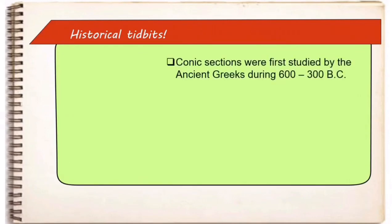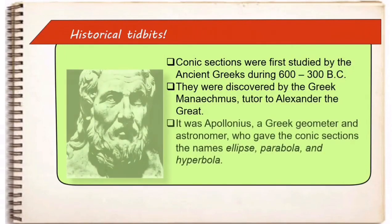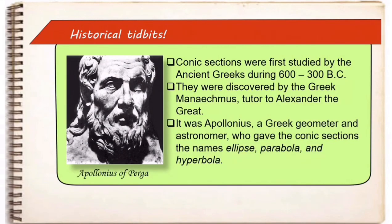Regarding the history of conic sections: conic sections were first studied by the ancient Greeks during 600 to 300 BC. They were discovered by the Greek Menaechmus, tutor to Alexander the Great. It was Apollonius of Perga, a Greek geometer and astronomer, who gave the conic sections the names ellipse, parabola, and hyperbola.